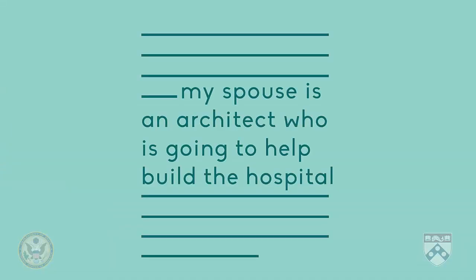For example, the journalist makes it clear who they spoke to and also who they could not speak to. Also, if the journalist has some connection to the story, they need to be transparent and tell people what that connection is. For example, if the journalist's spouse is an architect who is going to help build the hospital, he or she must state that in the article.